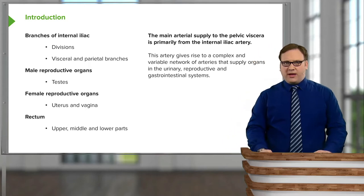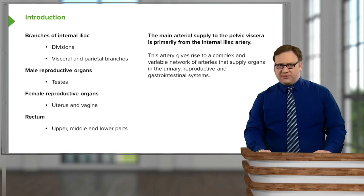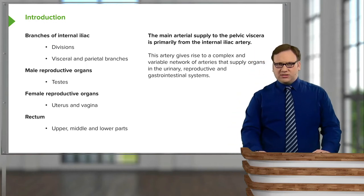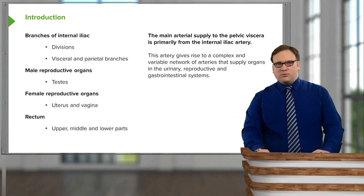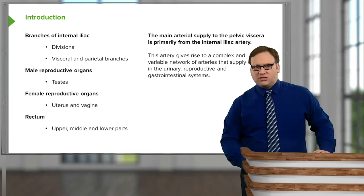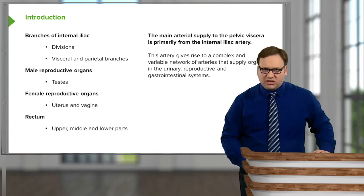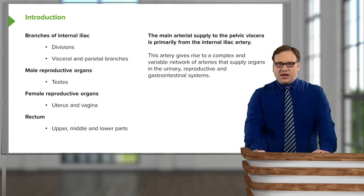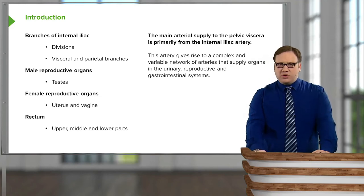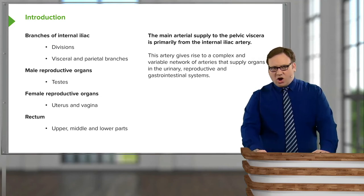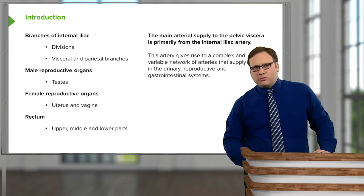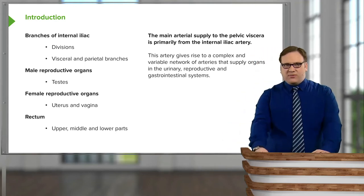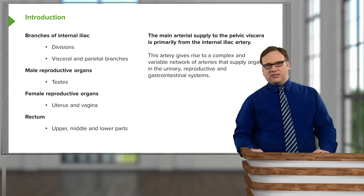We'll look at the walls of the pelvis and some specific organs — the male reproductive organs including the testes, and the female reproductive organs like the uterus and vagina and the specific branches that supply them. At the end, we'll look at the rectum, which has a complicated blood supply, starting with the upper, middle and lower parts.